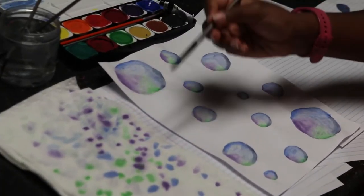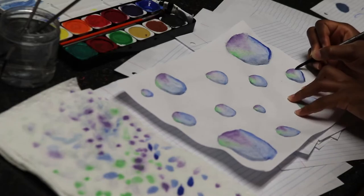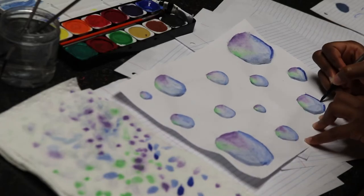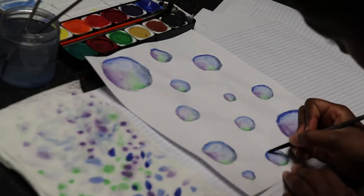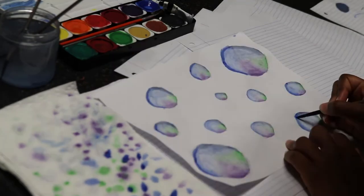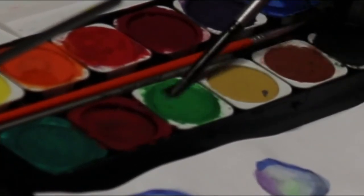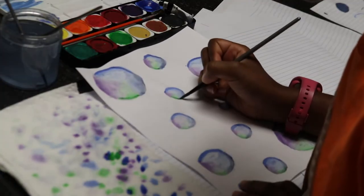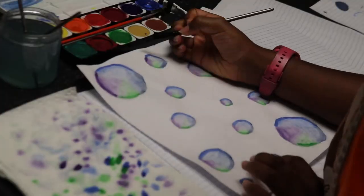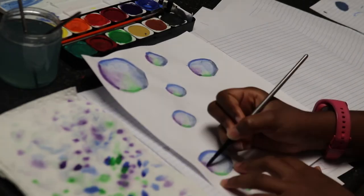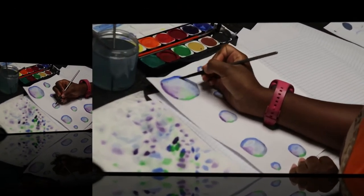Now once it's dry, we're going to do another layer and make it a bit darker and more vibrant. Do the blue first, then do the same thing for green and purple. Blend them together.